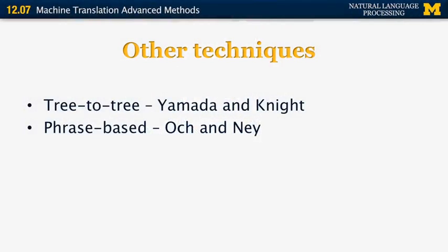Another technique was introduced by Och and Knight. This is a so-called phrase-based machine translation. So the idea is to recognize contiguous chunks of text that form phrases and translate them as units instead of one word at a time.